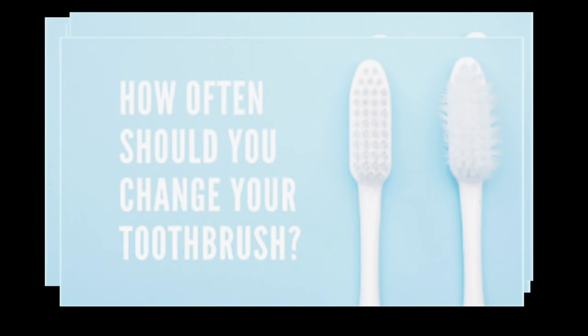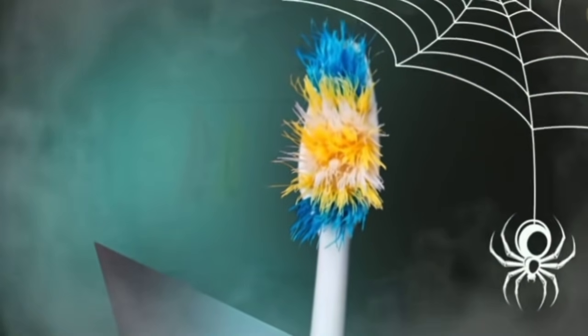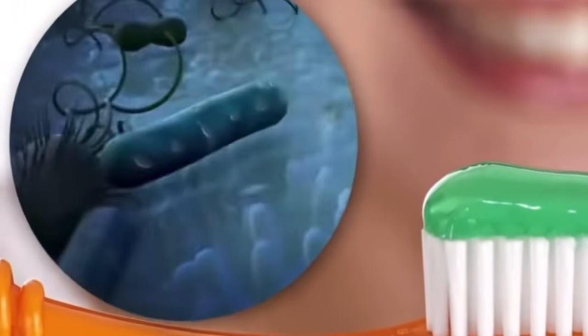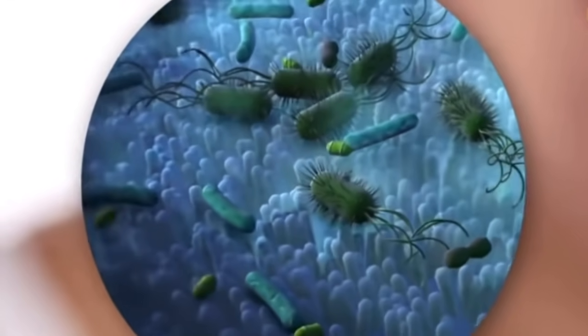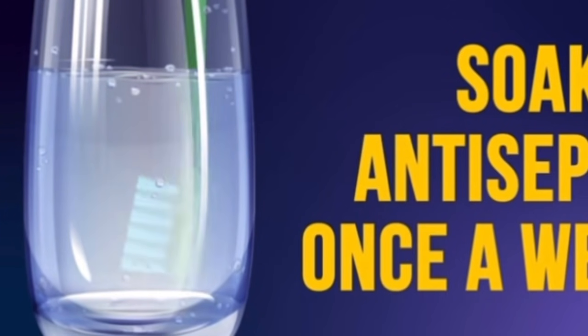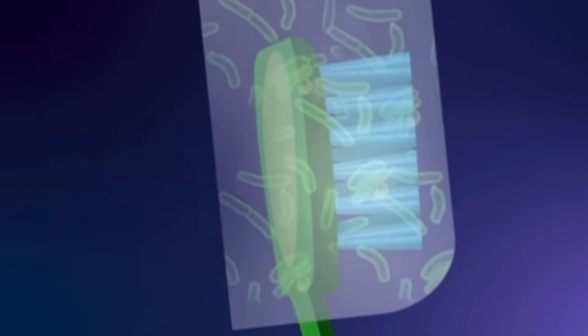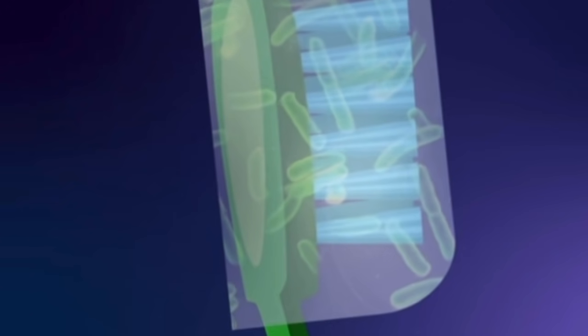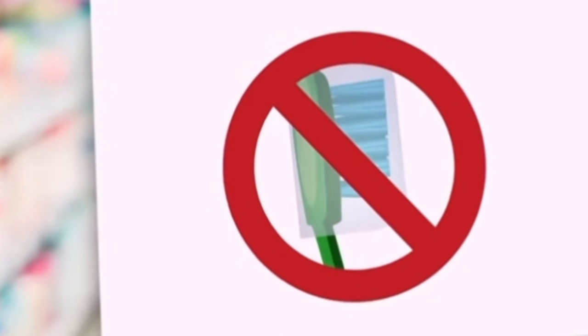Hygiene that we'll learn to do wrong. How often are we supposed to change our toothbrush? Our toothbrush is a home for more than 10 million bacteria, including E. coli that can cause diarrhea and vomiting.